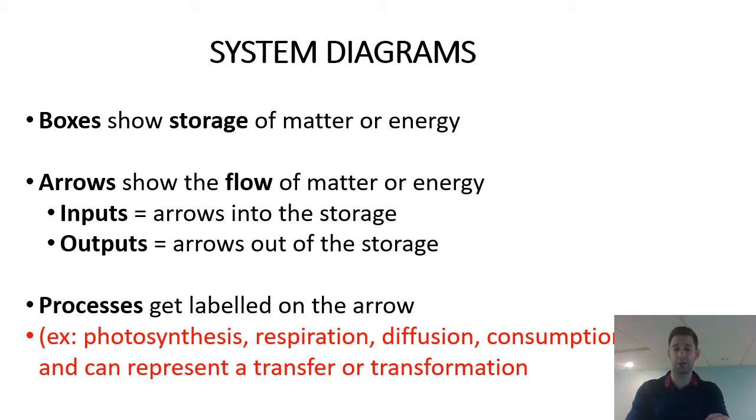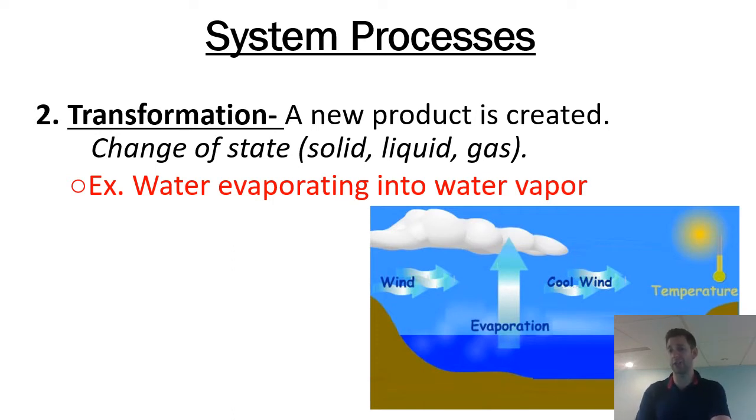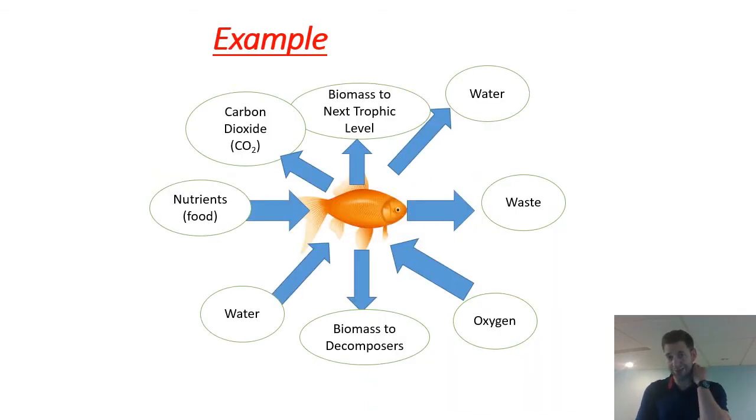You know, as easy as that sounds, you just learn five terms, storage, flow, input, output, process. Then you already know open, closed or isolated. A transfer is simply a change in location. So think about the water cycle for this one. Water falling out of the sky and hitting the ground, seeping underground into an underground aquifer, going from the aquifer into the ocean. Those are all transfers that simply changes in location. A transformation is a change in state or a change in product. So, again, when that water hits the ocean and then evaporates back into a cloud, that would be a transformation. When it condenses into a cloud back into water, that would be a transformation. When it precipitates from the cloud onto Earth, that would just be a transfer because it's just changing location.